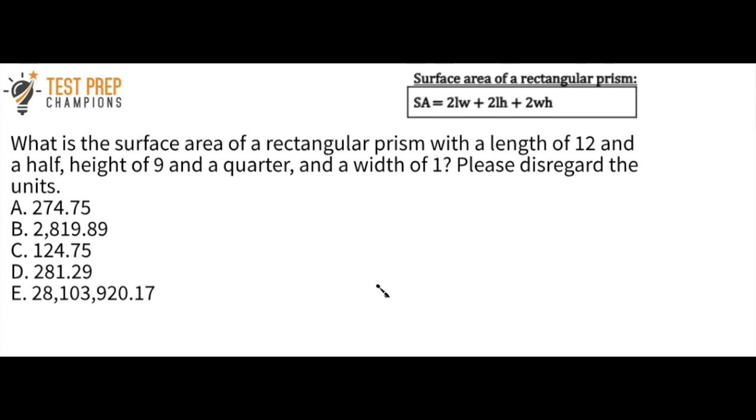Okay, so basically what we want to see here is that if we have a length of 12 and a half, we know that L equals 12.5. And if we have a height of 9 and a quarter, that means that H equals 9.25. If you think about it this way, how much is a quarter? A quarter is 25 cents. Well, if it's 9 and a quarter, it's 9.25. And a width of 1 is fairly easy to deal with. W just equals 1.